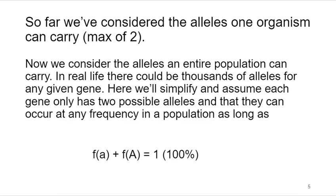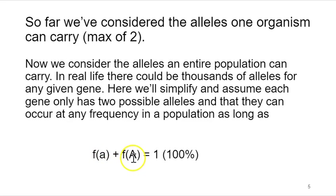In real life, each single gene generally exists in populations in potentially thousands of different forms. We are still going to simplify the system and only consider each gene as having two possible types of alleles. They can occur at any frequency as long as the frequency of one plus the frequency of the other sums to one, accounting for 100% of all the alleles. So if we look at the A gene with a little a and a big A allele, their frequencies within a population must sum to one.